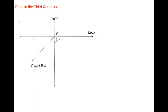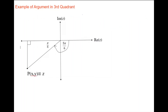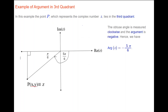If point P lies in the third quadrant, the argument of Z would be minus theta. As an example, suppose point P lies in the third quadrant and the angle between the negative real axis and the hypotenuse of the triangle is π/6. The obtuse angle measured from the positive real axis to the hypotenuse is 5π/6. But because point P is in the third quadrant, the argument is negative, so the argument of Z is minus 5π/6.